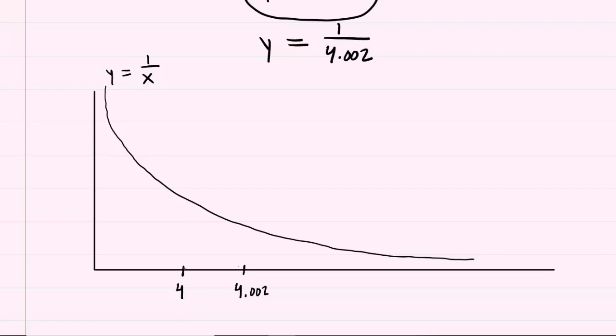So we've marked two locations on the x-axis. We have a 4 and then 4.002. We'll notice that if we plugged 4 into the equation, we would have y equals 1 over 4. So that would mean that we would have a point on the curve located right here whose x coordinate is 4 and whose y coordinate is 1 fourth.